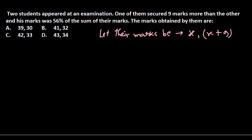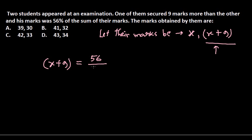Now what they state is that his mark — that is, the mark of the student who scored nine more — was 56% of the sum of their marks. So this particular student secured nine marks more than the other, and his mark was 56% of the total combined marks. So the marks of this student is 56 by 100, multiplied by the sum of their marks.